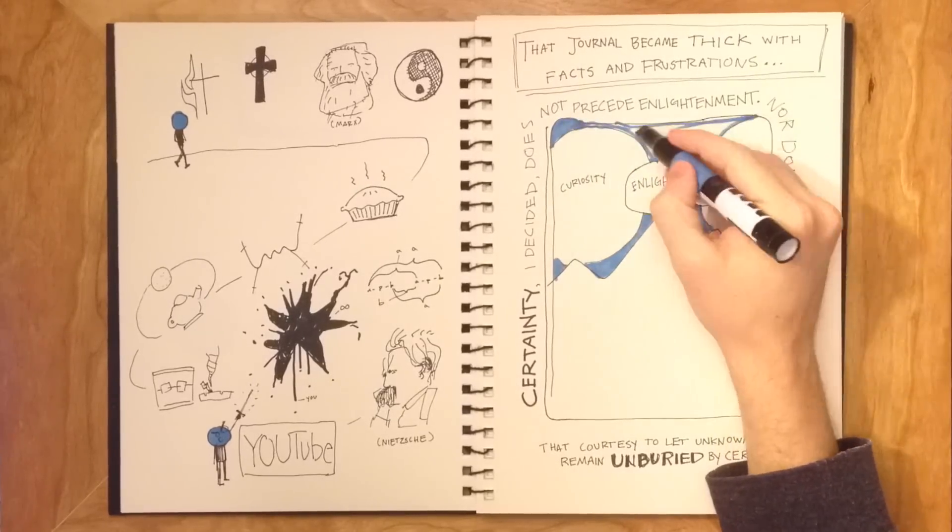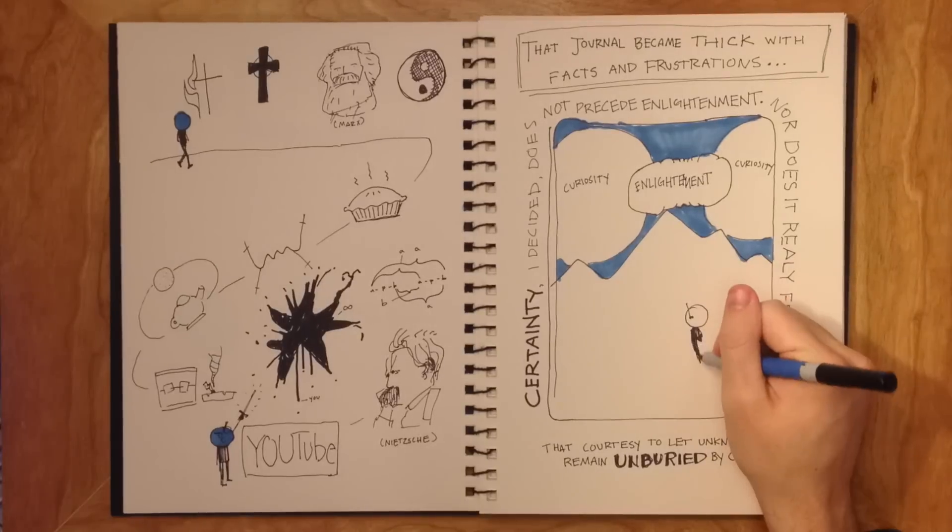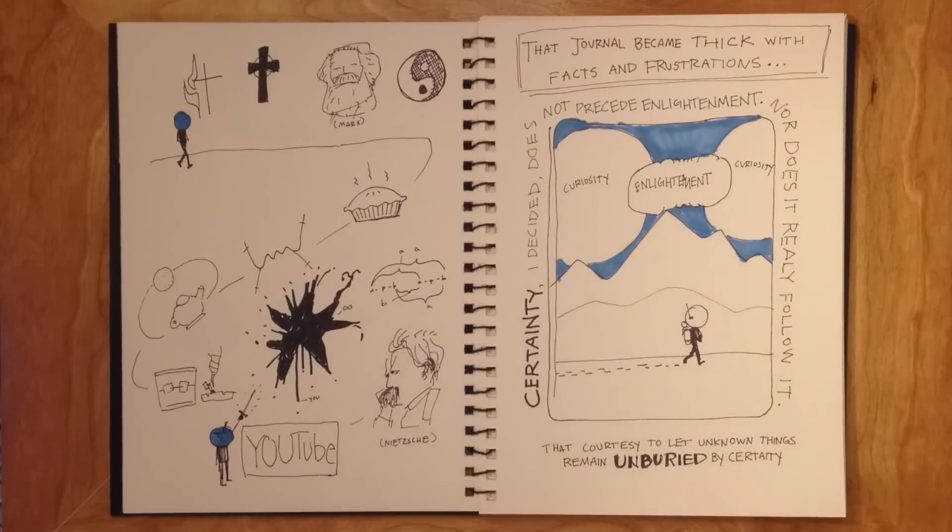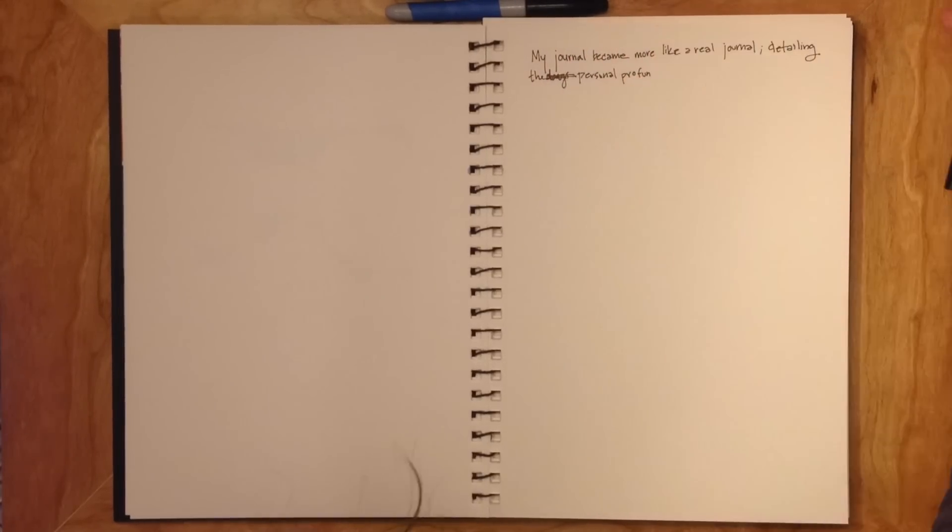I turned back towards exploration. I traveled aimlessly. I danced. I ate good food and I kissed pretty people. My journal became more like a real journal, detailing the days, my feelings, the personal profundities of everyday life.